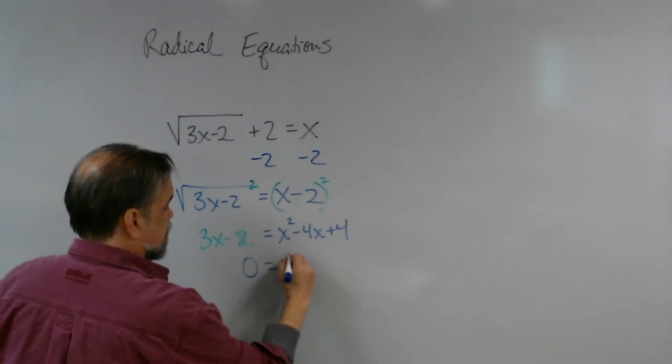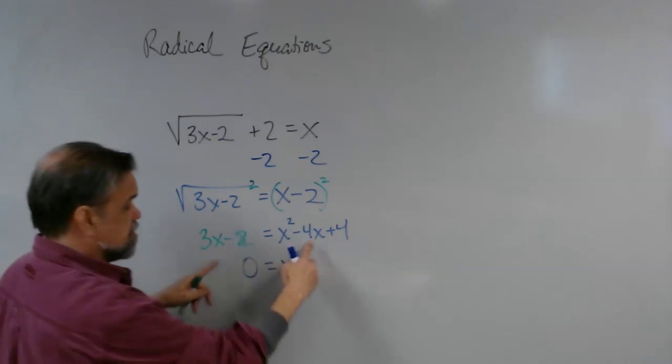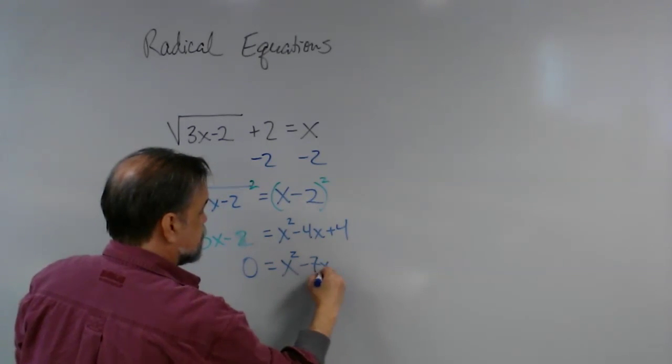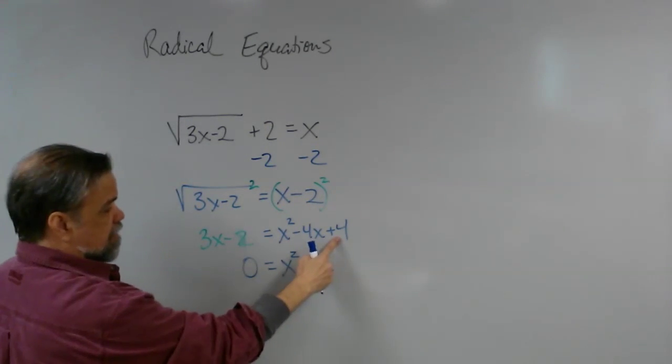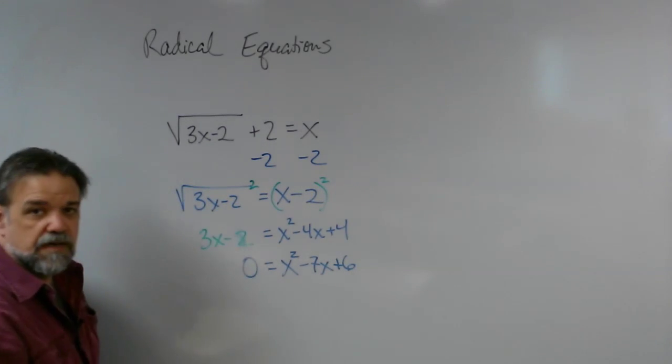Over here that's going to get me, nothing happens to my x squared, but now I have negative 4x minus 3x is minus 7x, and now I have 4 plus 2, so that's plus 6.